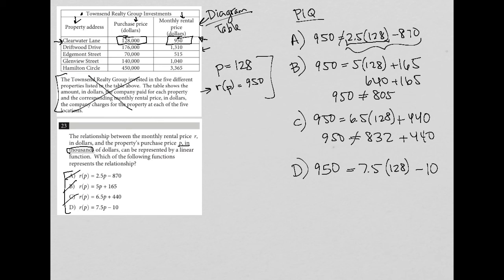So let's see what that is. Seven point five times one hundred and twenty eight is nine hundred and sixty. And here it is. Nine sixty minus ten is, in fact, equal to nine fifty. This is a true statement. And therefore, choice D is the best answer.